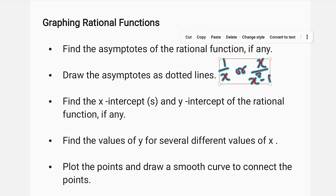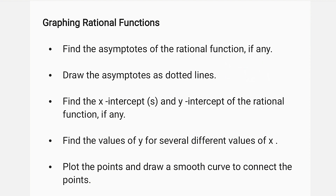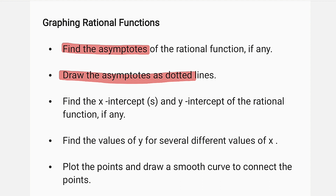Here are some important points you should know before constructing any rational function. The first one is finding the asymptotes of a function. An asymptote of a rational function is a line, region, or boundary where the curve will never cross or touch, but it can go closer and closer to that point. We need to construct these asymptotes using a dotted line.